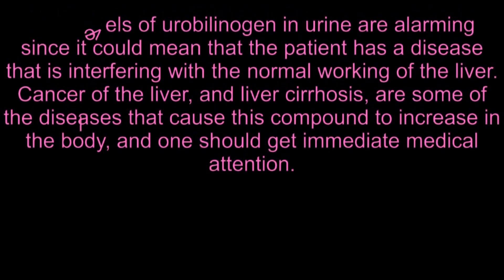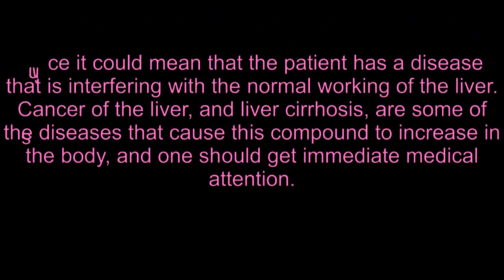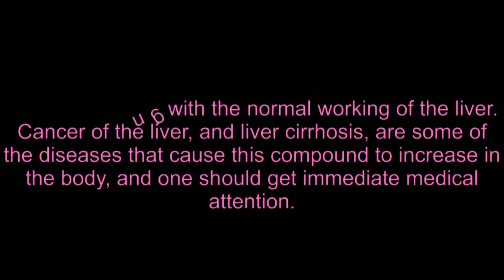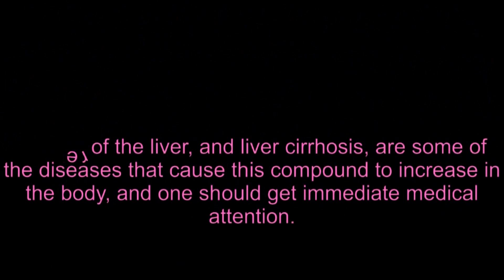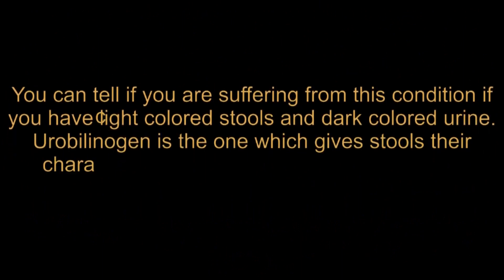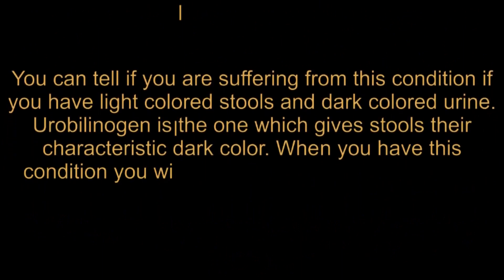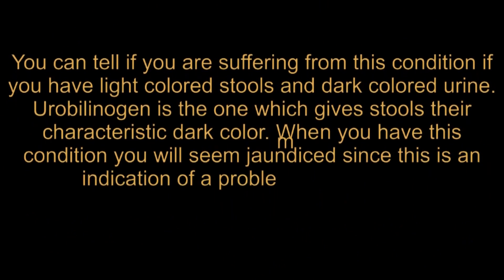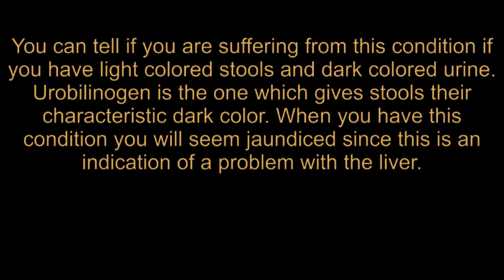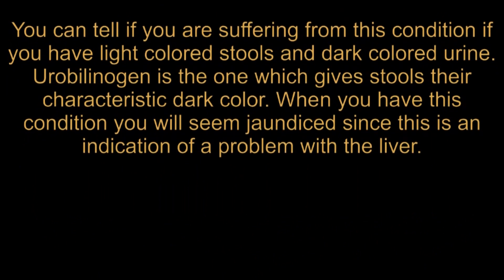High levels of urobilinogen in urine are alarming since it could mean that the patient has a disease that is interfering with the normal working of the liver. Cancer of the liver and liver cirrhosis are some of the diseases that cause this compound to increase, and one should get immediate medical attention. You can tell if you are suffering from this condition if you have light-colored stools and dark-colored urine. Urobilinogen is what gives stools their characteristic dark color. When you have this condition, you will appear jaundiced, since this is an indication of a problem with the liver.